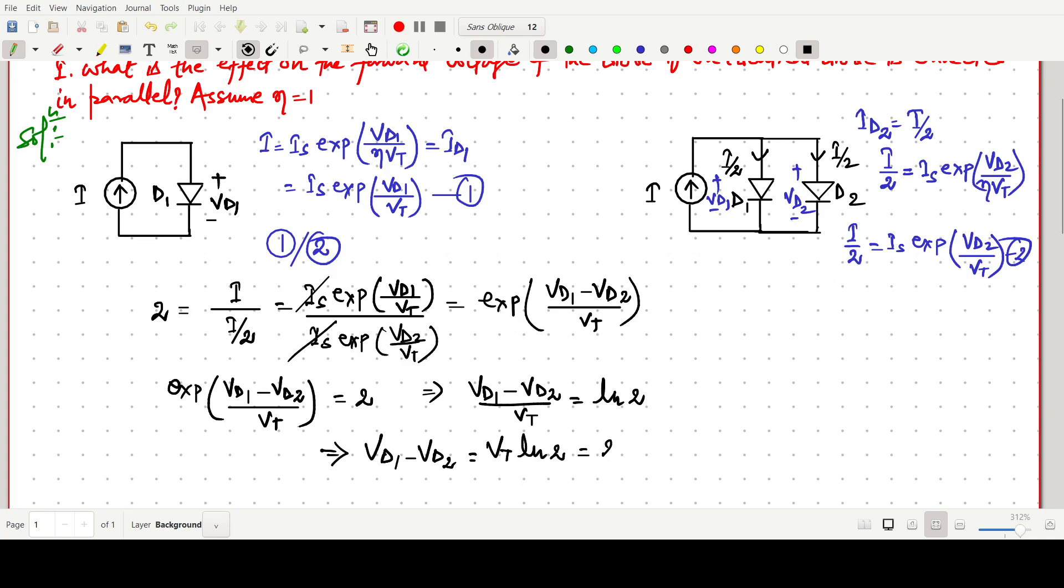Now the thermal voltage I am assuming 25 millivolt. So 25 into 10 to the power minus 3 into ln 2. ln 2 value will be 0.69. If we multiply these two, it will come 17.25 into 10 to the power minus 3 or 17.25 millivolt.